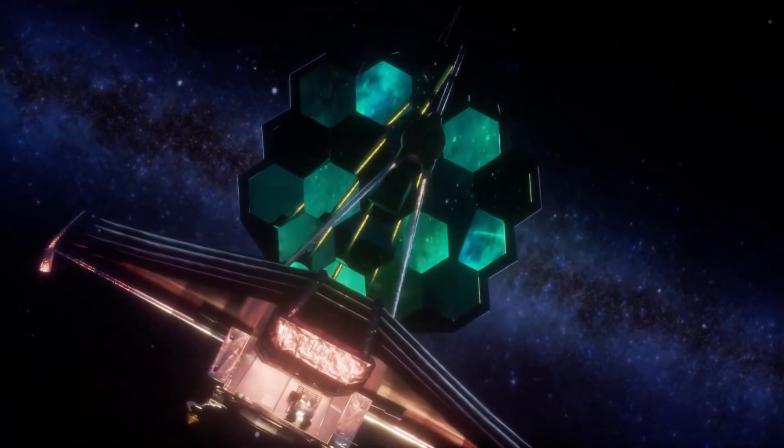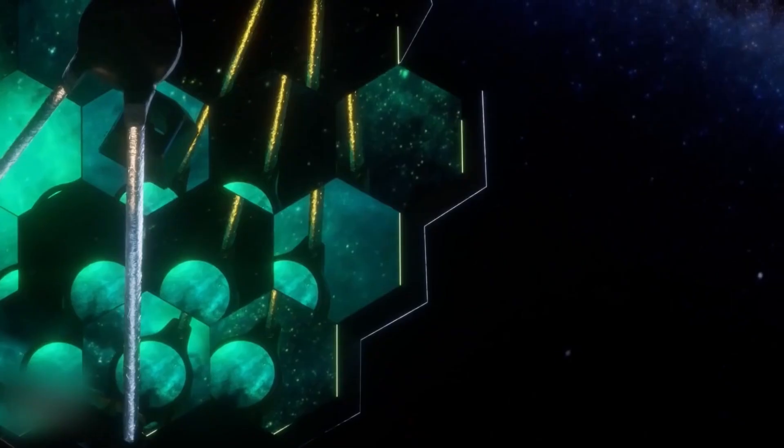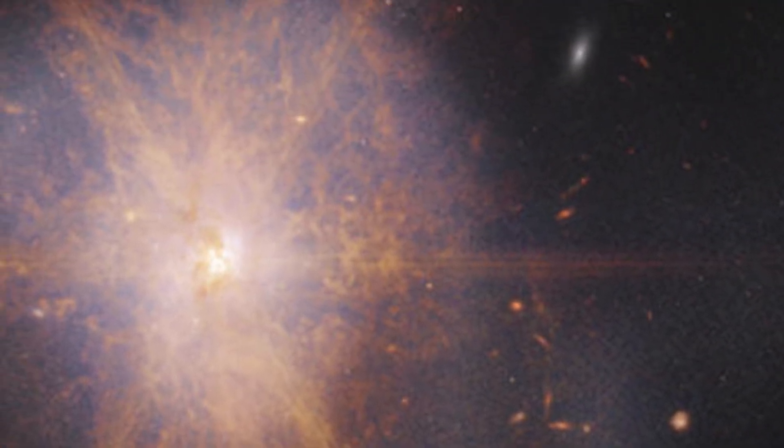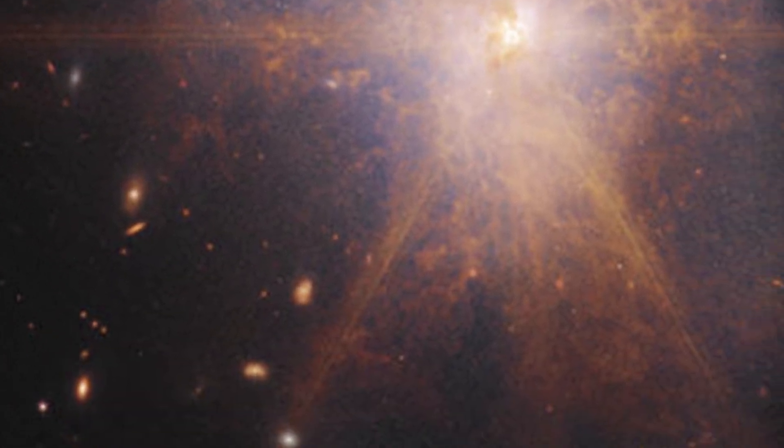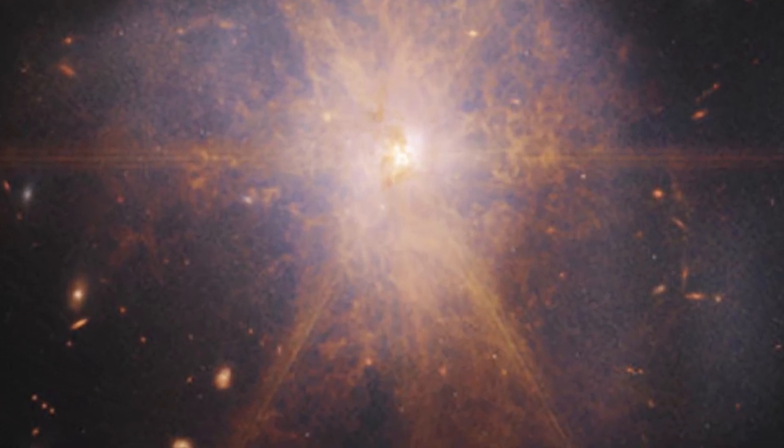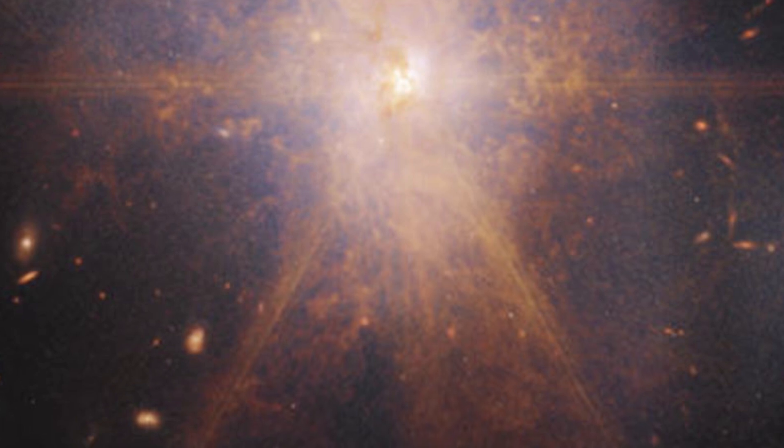This latest view from the James Webb Space Telescope shows an impressive galactic merger of the two galaxies. This image also shows faint tidal tails extending from the outskirts of the merger, indicating the gravitational pull between the two galaxies. Finally, the reddish and orange streams and filaments represent scattered organic materials in ARP-220.